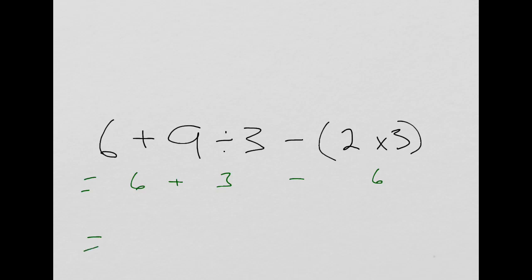And because this is addition and subtraction, we can now just go left to right. 6 plus 3 is 9, and then minus 6. And 9 minus 6 is 3. Recognizing this is just a matter of practice.